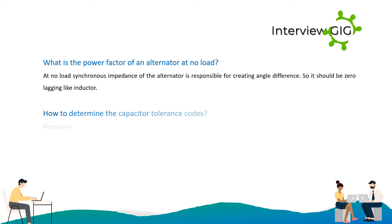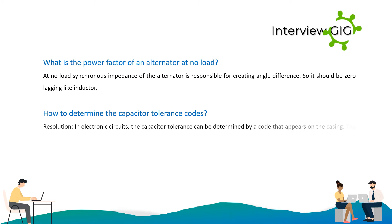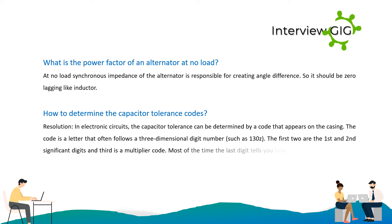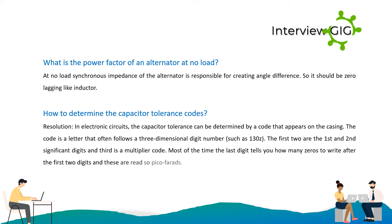How do you determine Capacitor Tolerance Codes? In electronic circuits, the capacitor tolerance can be determined by a code that appears on the casing. The code is a letter that often follows a three-digit number, such as 130Z. The first two digits are the first and second significant digits, and the third is a multiplier code — it tells you how many zeros to write after the first two digits, and these are read as picofarads.